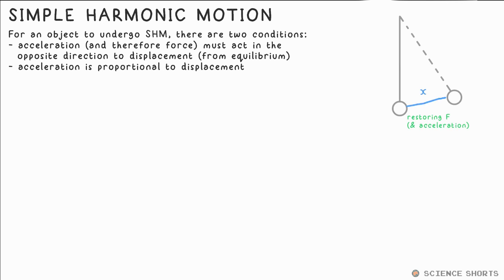Simple harmonic motion describes any object that is oscillating around a point, like a pendulum or a mass on a spring. There are two conditions. The acceleration must be proportional to the object's displacement from equilibrium, and it must be in the opposite direction to the displacement.